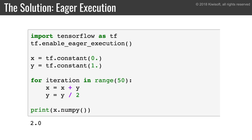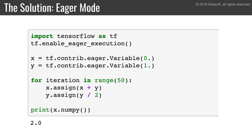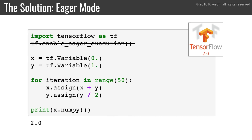In this example I've used constants, but you could use variables instead, and update them in place by using the assign method. Now, in TensorFlow 2.0, eager execution will be the default, so you won't need to enable it, and you will be able to just create variables with tf.Variable.